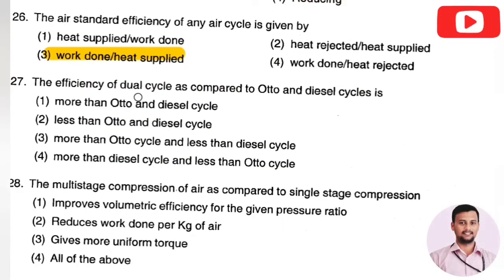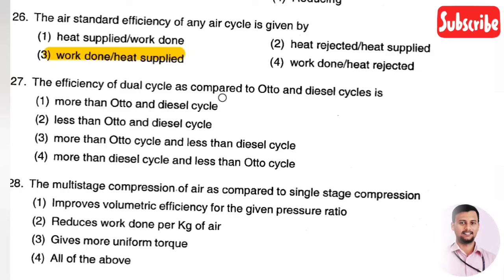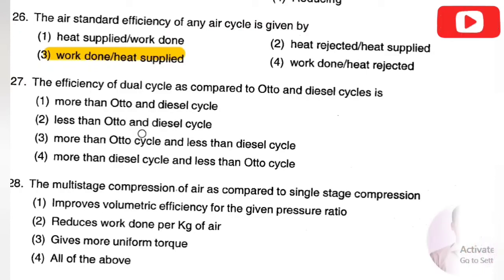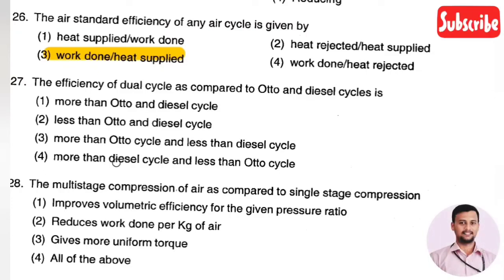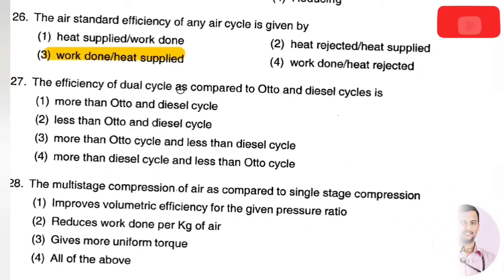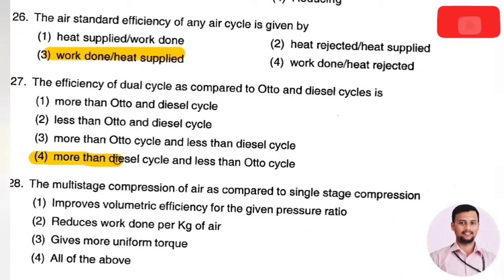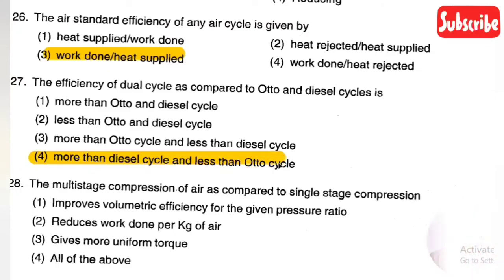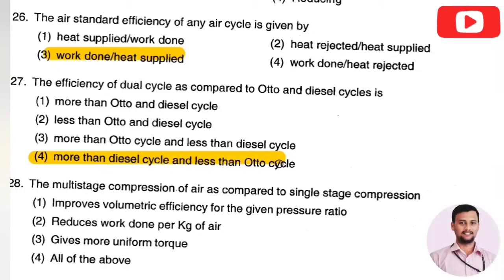The next question: the efficiency of a dual cycle compared to Otto and diesel cycles is — Option 1: more than both, Option 2: less than both, Option 3: more than diesel only, Option 4: more than diesel but less than Otto cycle. The right answer is Option 4. The dual cycle efficiency is more than the diesel cycle but less than the Otto cycle.